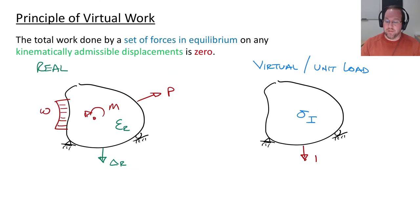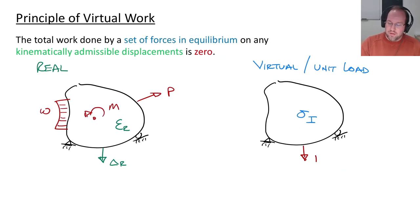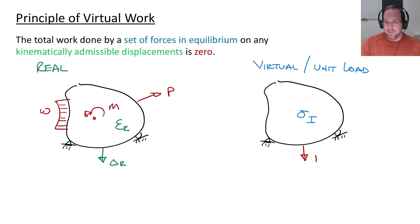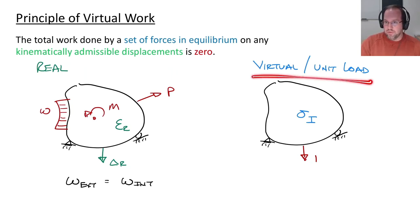Now we apply the principle of virtual work: the total work of my set of forces in equilibrium — I'll choose the virtual system — on any kinematically admissible displacements (which the real system provides) must equal zero. Work equals zero means external work equals internal work. External work is force times distance, so I consider forces from my virtual system and displacements and strains from my real system.